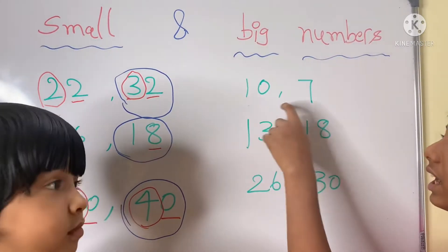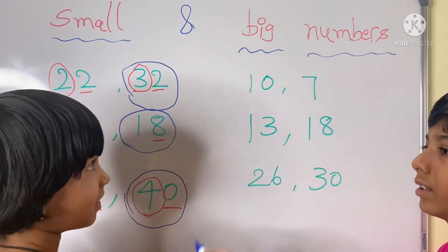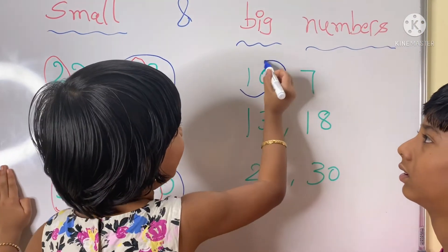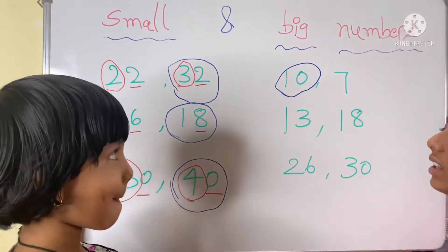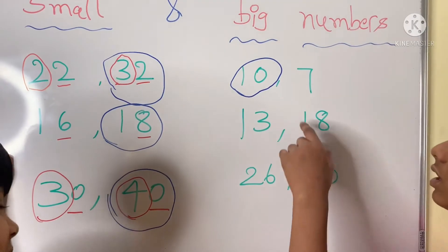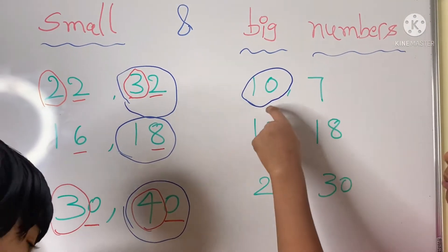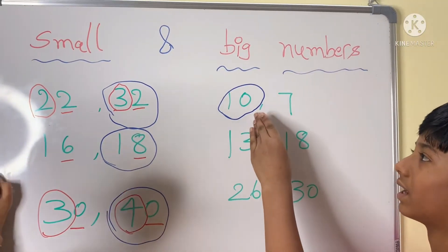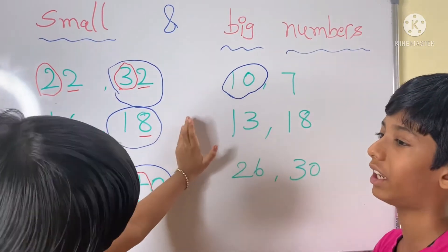10 and 7 — which is the big number? Ten. Why? Because 10 is a two-digit number. So 7 is in the ones column, but 10 is in the tens column. So 10 is greater than 7.